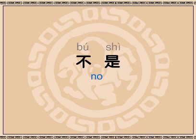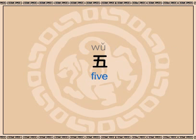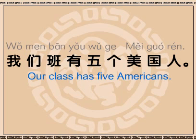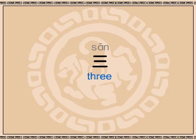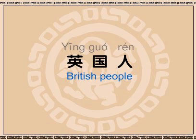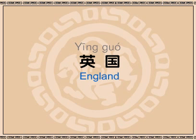And then he goes on to say 我们班有五个美国人。 The new word here is 五, which means five. Can you figure out the rest? I think so. Our class has five Americans, right? Very good. The last part is 三个英国人。 You'll probably remember from the last lesson that 三 means three, and 英国人 means British people. Because 人 means people, so 英国 must be England. You got it. See, Chinese isn't so hard.